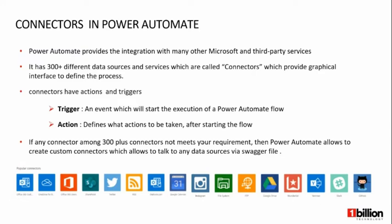These two attributes — triggers and actions — are really important in Power Automate. If any of the 300-plus connectors doesn't satisfy our requirement, Power Automate allows us to create custom connectors as well. But to do these kinds of things, we do need some programming knowledge.